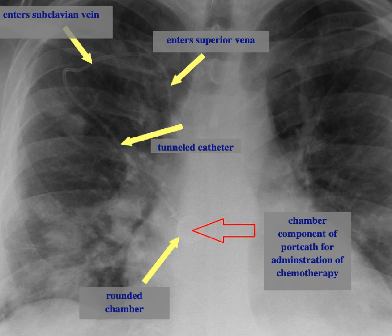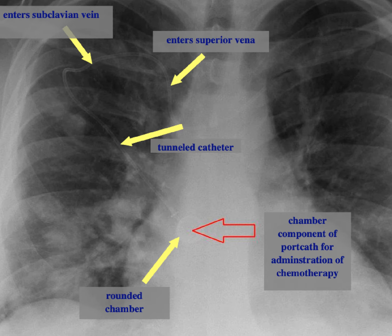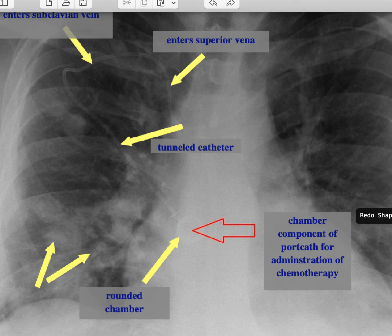The purpose of this device is various, but there are clues on this chest X-ray that indicate that this chamber is to be used for the administration of chemotherapy. The evidence on the chest X-ray includes these round nodules that we're seeing in both lungs,